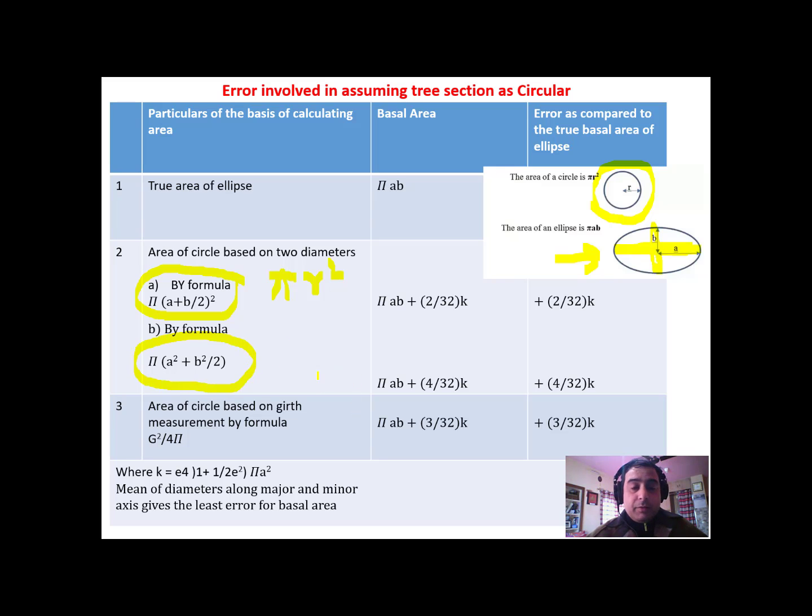Now, both of these formulas have given us results which have certain errors. And you can clearly see that the least error is found by using the formula one. So you have to average the diameters first, then estimate the basal area. And in the second case, the error involved is much more than the first formula, which is 4 by 32k.